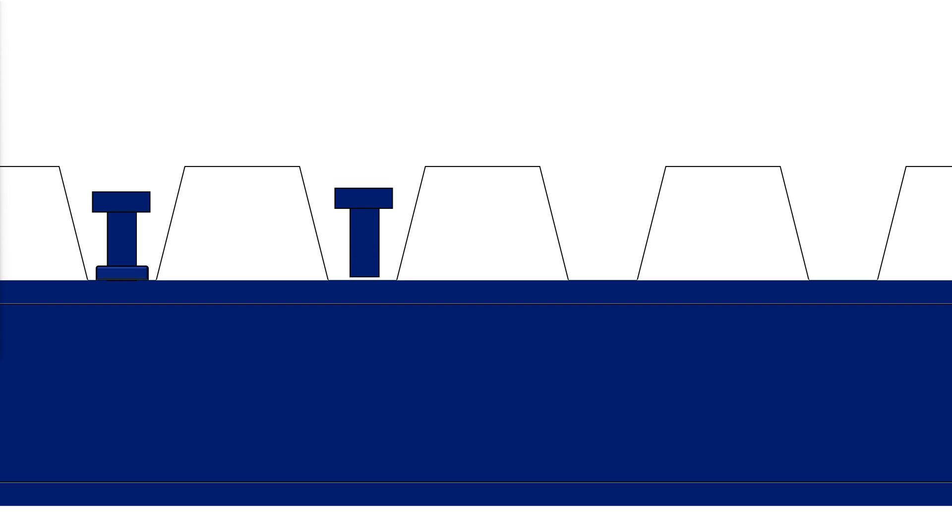Since the studs can be placed only in the ribs, their spacing along the length of the beam is limited to multiples of the rib spacing.